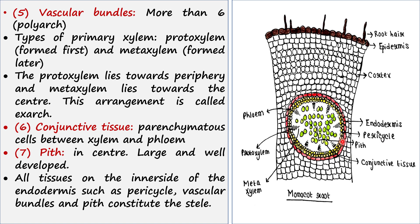Next to the pericycle we can find vascular bundles, which are made up of xylem and phloem. In this case you can find more than six vascular bundles — this type of arrangement is called the polyarch condition. Here we can count eight such vascular bundles, so this is called the polyarch condition.